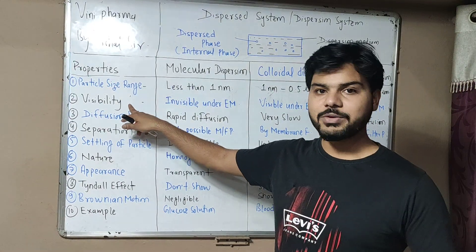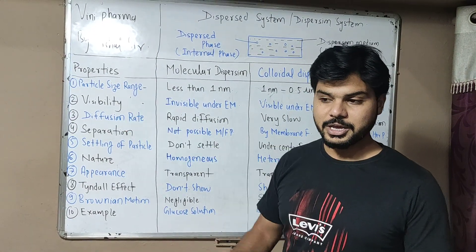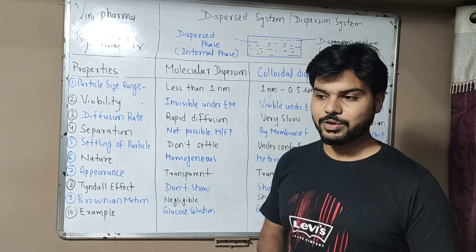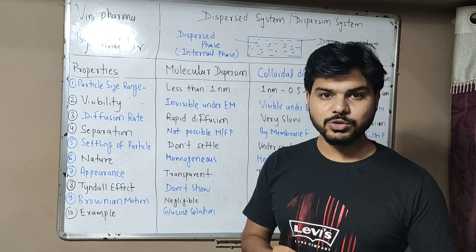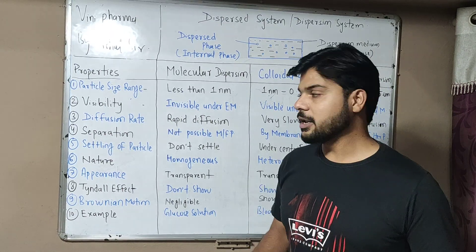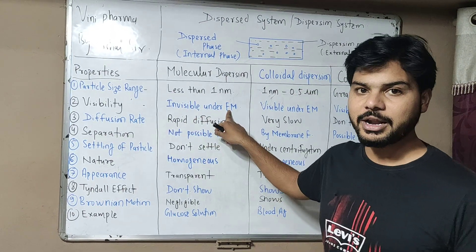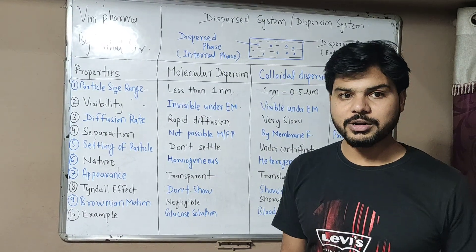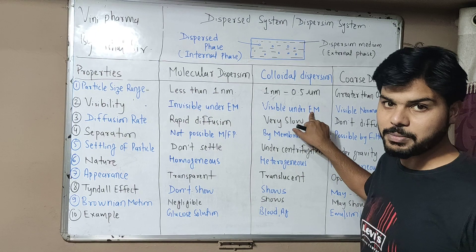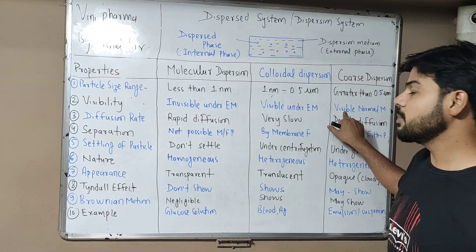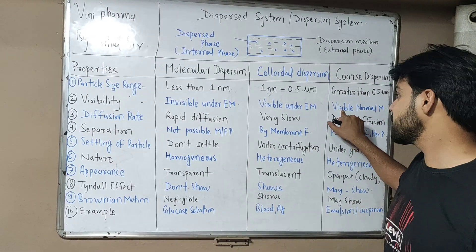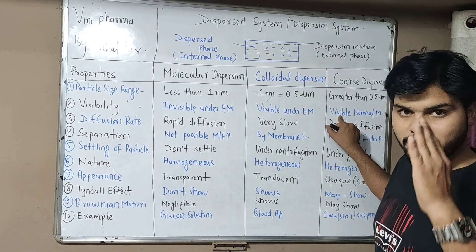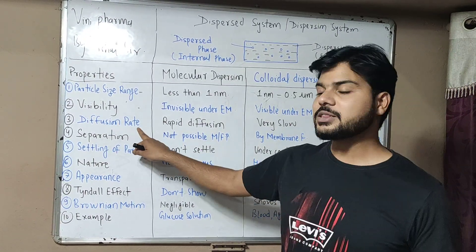Now we will talk about visibility. In molecular dispersion, particles are not visible — they are invisible even under electron microscopy. Colloidal dispersion is visible under an electron microscope. Coarse dispersion is visible under a simple microscope or even with the naked eye.